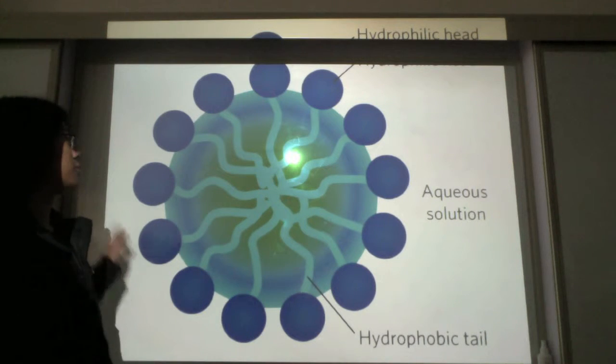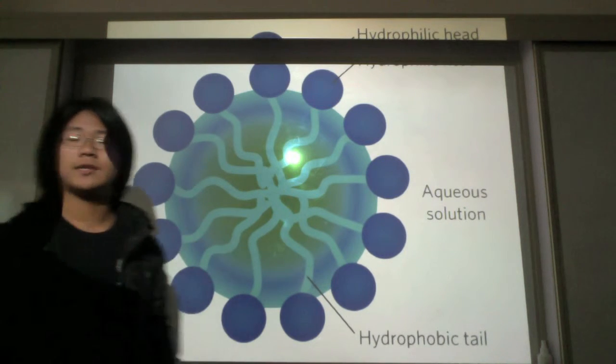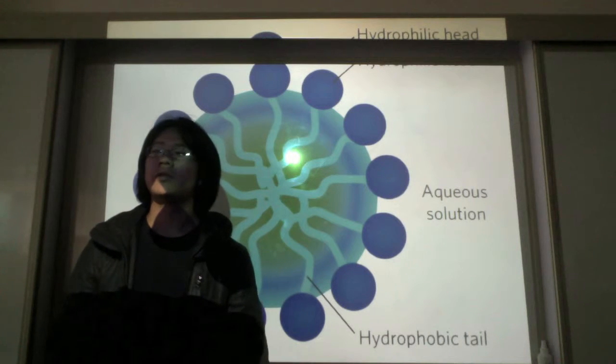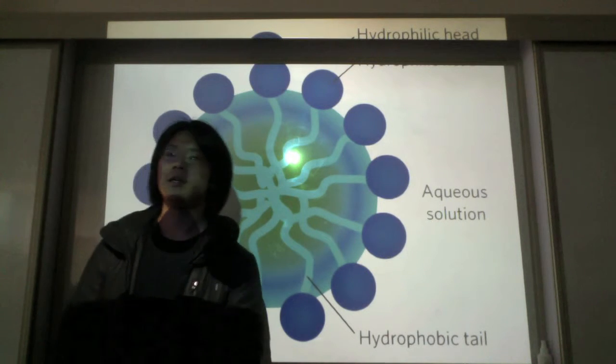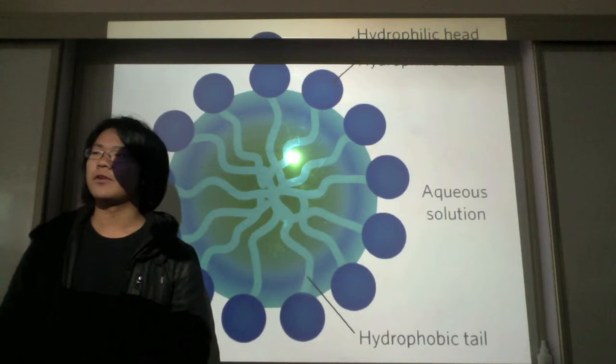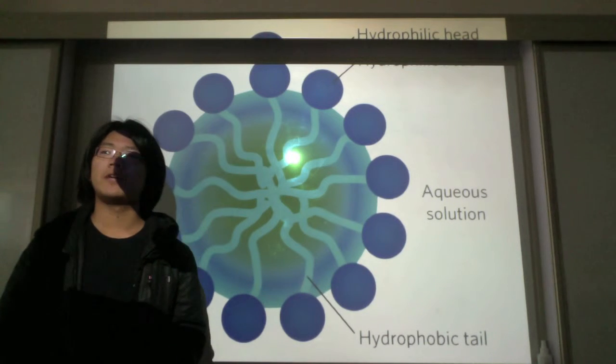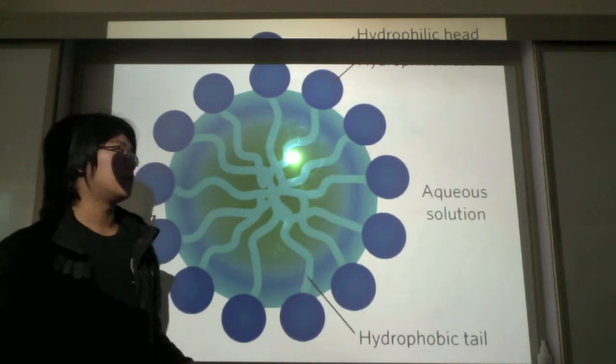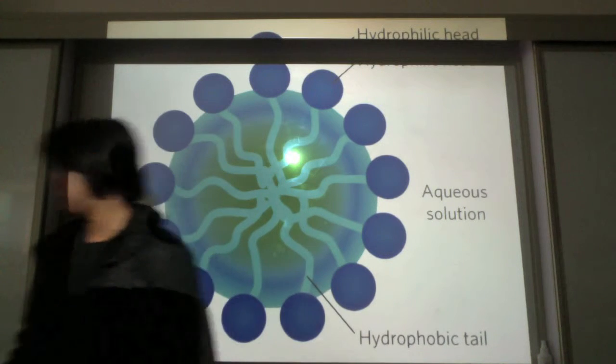Therefore segregating the aqueous solution, which would be water, with something on the inside, which can be anything, which is oil. This is how soaps work. And if you're doing the option H for human physiology, this is what a bile salt does to digest lipids.